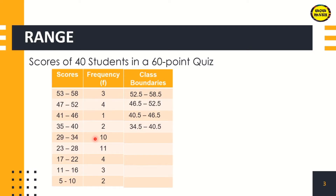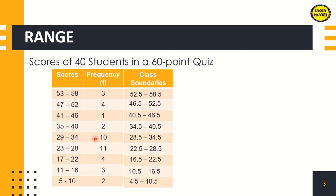For the 29 to 34 class, subtract 29 by 0.5 then add 0.5 to 34, giving us 28.5 to 34.5 as the class boundary. Then the 17 to 22 class gives 16.5 to 22.5. Next would be 10.5 to 16.5. Then the last row would be 4.5 to 10.5. Again, subtract 0.5 on the lowest score in each class, then plus 0.5 on the highest score in each class.